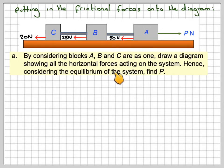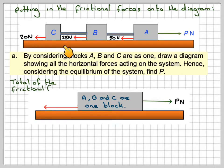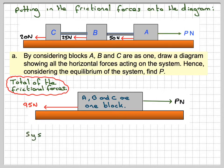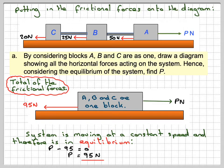draw the diagram showing all the horizontal forces acting on the system. Hence, considering the equilibrium of the system, because the thing's moving with a constant velocity, find P. If we combine A, B, C as one block, we have our force P newtons, then we have our frictional forces. If we add them up, it would be 20 plus 25 plus 50, which is 95 newtons. As the system is in equilibrium, at constant speed so there's no acceleration, P minus 95 is equal to 0, therefore P must be 95 newtons.